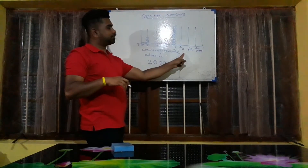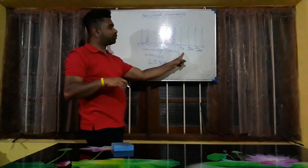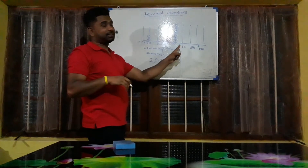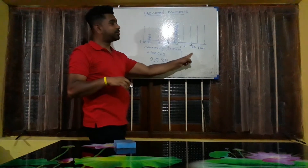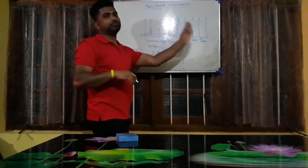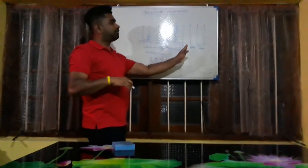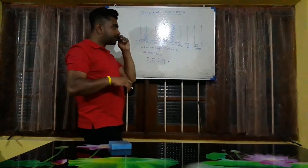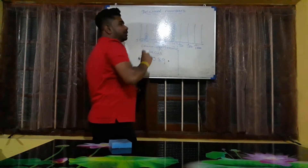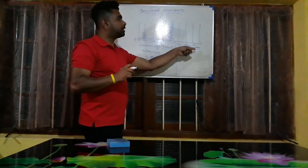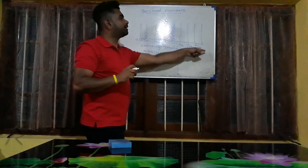The 1 upon 10 place we call the first decimal place. Then tens, hundreds, thousands — like that according to powers of 10 on the whole number side. On the decimal side, according to 1 upon 10 powers, we say first decimal place, second decimal place, third decimal place, fourth decimal place, and so on.